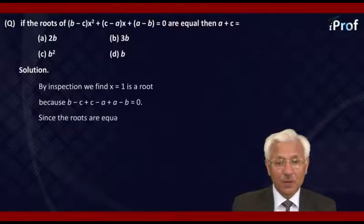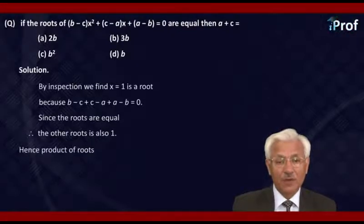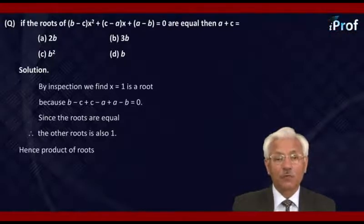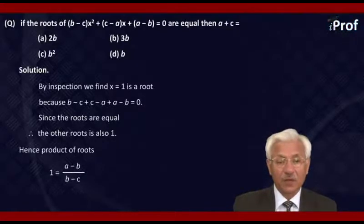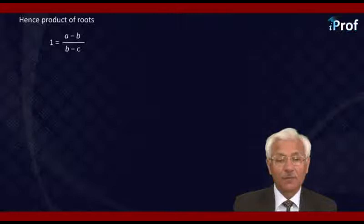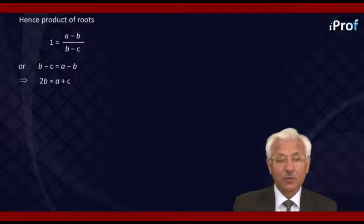Since the roots are equal, therefore the other root is also 1. That means the product of roots is 1 into 1, which is equal to the constant term divided by the coefficient of X squared. That becomes 1 is equal to (A minus B) upon (B minus C). Cross multiplying, we get B minus C equal to A minus B, or 2B is equal to A plus C.